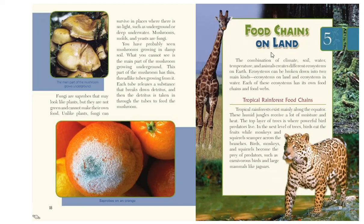Next up, food chains on land. The combination of climate, soil, water, temperature, and animals creates different ecosystems on earth. Ecosystems can be broken down into two main kinds: ecosystems on land and ecosystems in water. Each of these ecosystems has its own food chains and food webs.